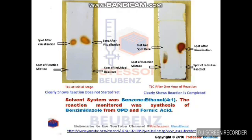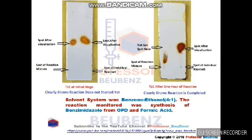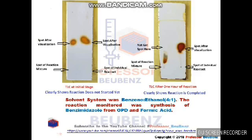Looking at the TLC after one hour of reaction, it clearly indicates that we are not getting the spot of the reactant in the reaction mixture, showing the reaction is complete. If you still get the spot of the reactant in the reaction mixture, it indicates some unreacted material remains. Additionally, tailing of the peak is observed in the reaction mixture spot, which is due to the presence of formic acid — acids typically cause tailing in TLC.